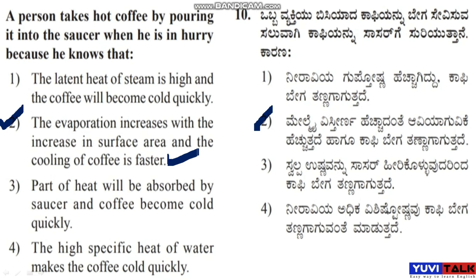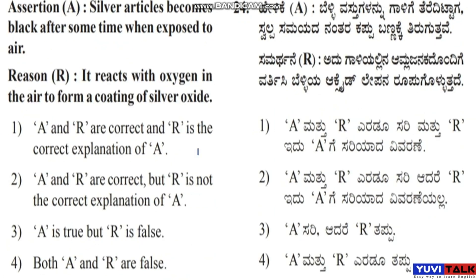Next question with assertion and reason: Assertion A: A silver article becomes black after some time when exposed to air. Reason R: It reacts with oxygen in the air to form a coating of silver oxide. Option 1: A and R are correct and R is the correct explanation of A. Option 2: A and R are correct but R is not the correct explanation of A. Option 3: A is true but R is false. Option 4: Both A and R are false.